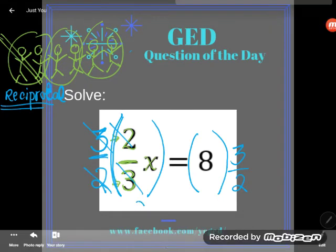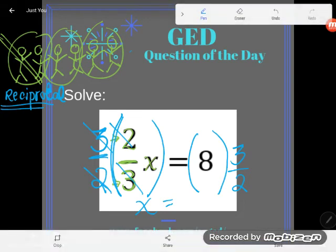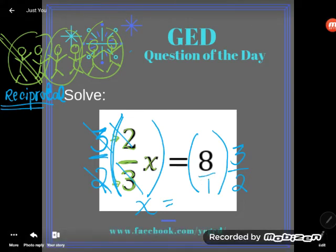So on this side, we saw that cancellation, so my x would be alone. And on this side, I just have to multiply this fraction, 3/2 of 8, and it's super easy to multiply fractions.